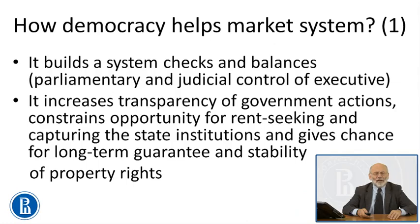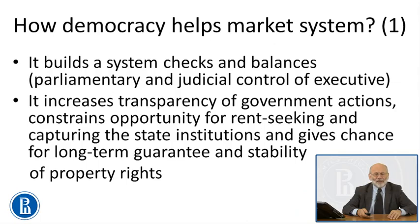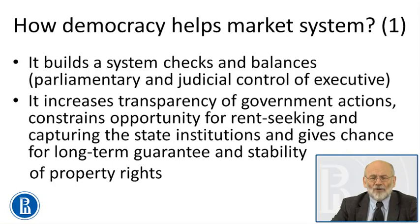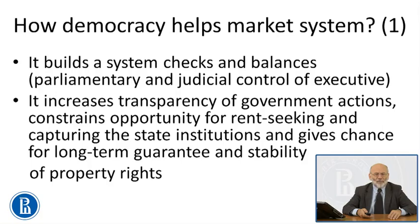Now let's analyze the opposite relationship — how democracy helps the market system. First, democracy involves a system of checks and balances, for example parliamentary or judicial control of executive power. This is very important for limiting abuse of power and acting within the rule of law. It also increases transparency of government action, constrains rent-seeking by interest groups, prevents capture of state institutions by such groups, and provides long-term guarantees and stability of property rights — all extremely important things for the proper functioning of the market system.